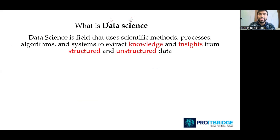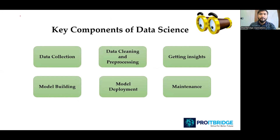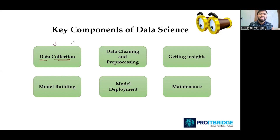Now let's look at the key components a data scientist performs in any project. The very first step is to collect the data — from the client, through web scraping, or various other sources. After collecting the data, it won't be in a clean format; there will be unnecessary information that needs to be removed. So the second step is data cleaning and pre-processing.